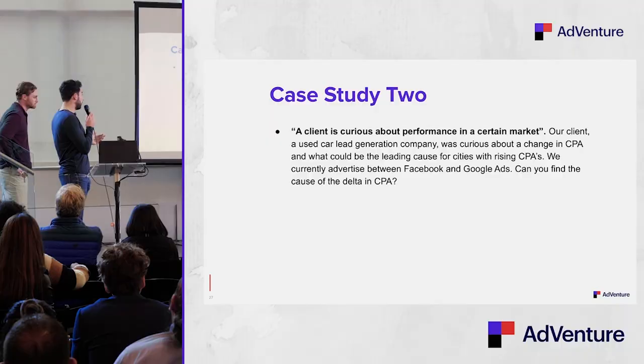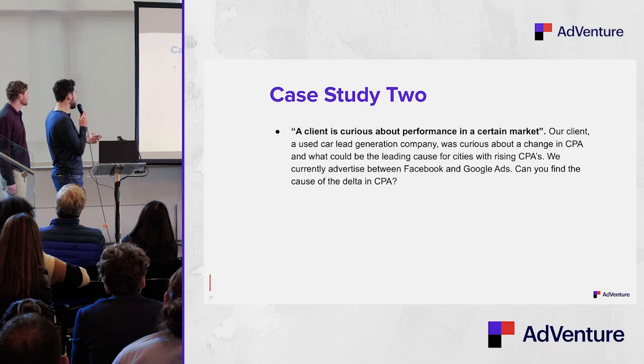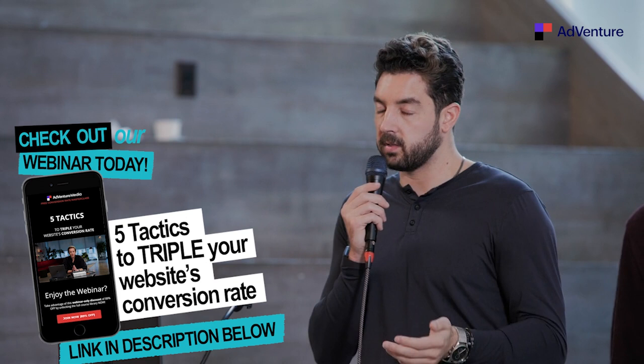Another example: a used car lead gen client was curious about changes in CPAs across markets and what could be the leading cause. They advertise on both Facebook and Google. We created a report taking all the locations they market in — Houston, LA, New York, Miami, Detroit — and with color coordination we can immediately see which markets have elevated CPAs, drill into those reports, and answer: did we spend more on Facebook or Google? What changed, and why did those changes occur?